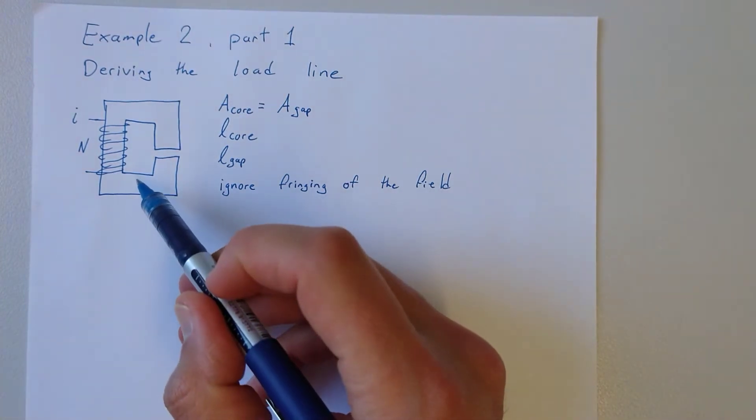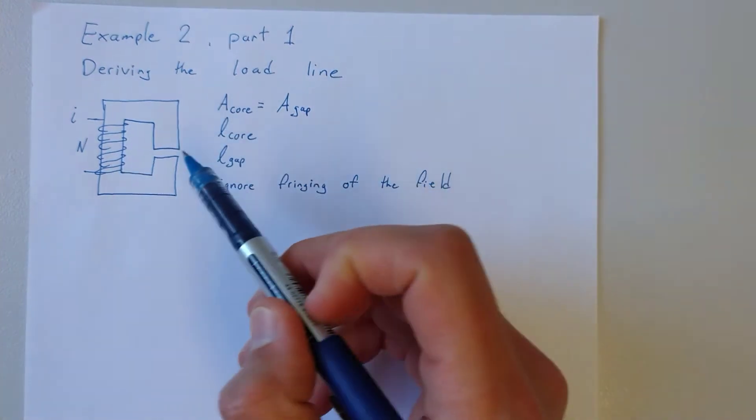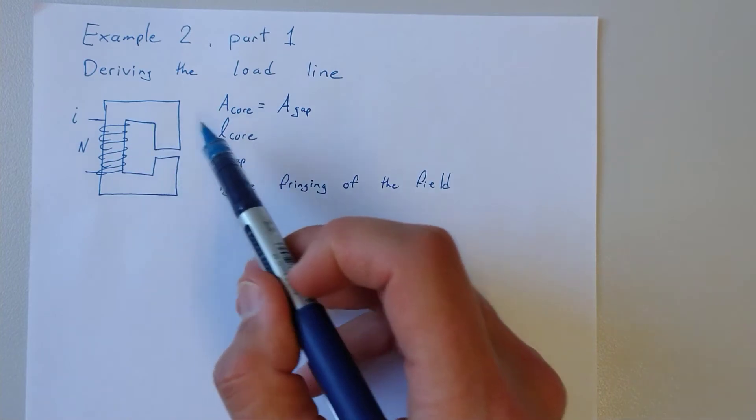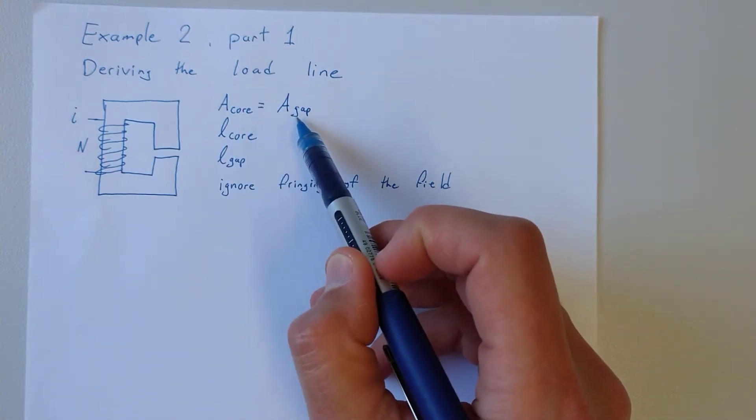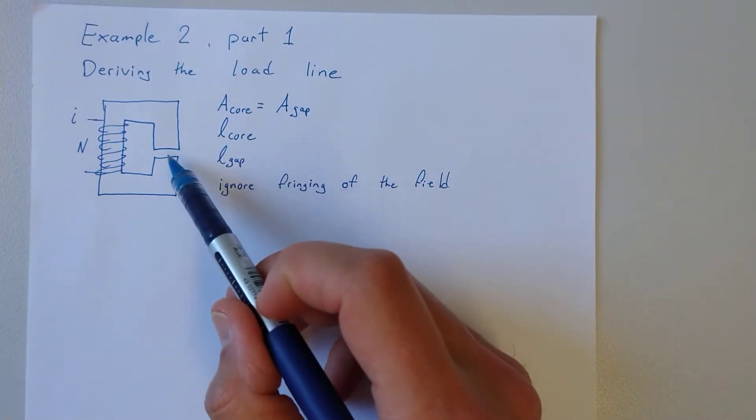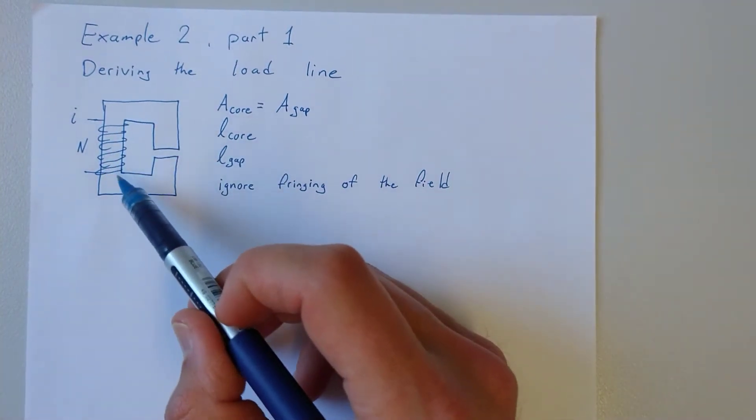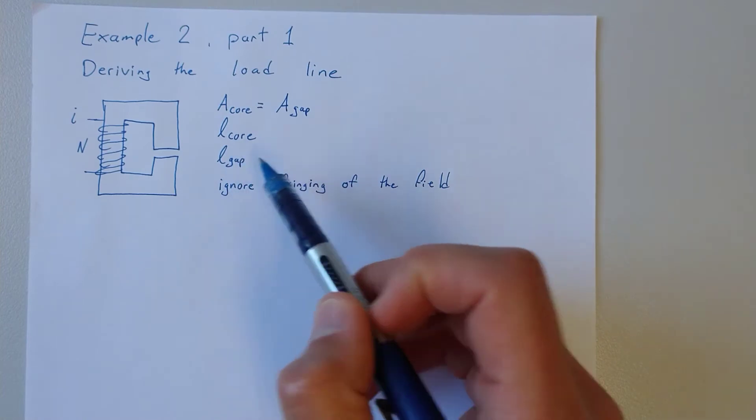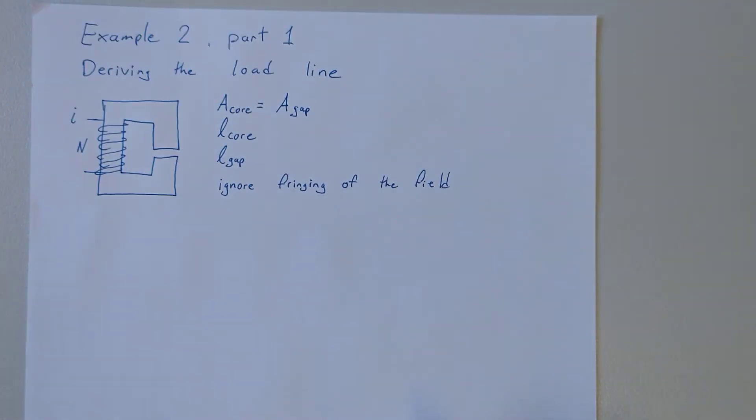Again, we'll have a more realistic core here which represents a motor in some cases. It has some area and there's a gap. That gap also has an area. In this case, those two are going to be the same. There's a length and that core length is very similar to the core length plus the gap. We're also going to ignore the fringing field.